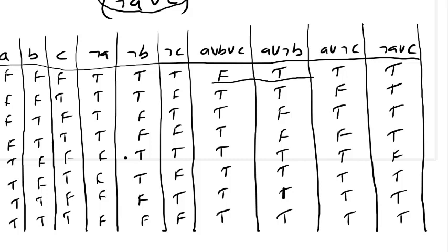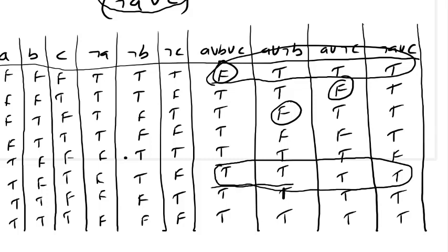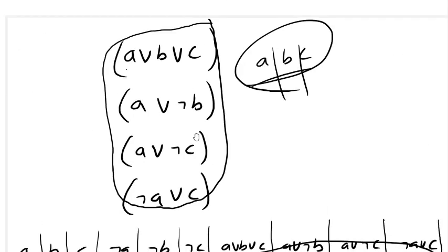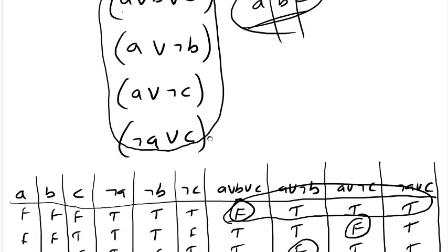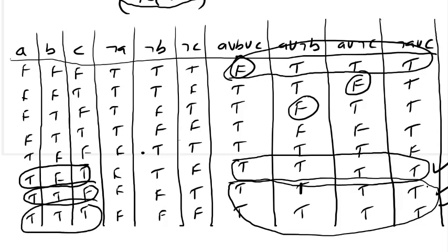Looking at the eight assignments, we find that a particular assignment does satisfy the clauses. For example, A equal to true, B equal to false, and C equal to true can make this particular set of clauses satisfiable. So we say the set is satisfiable and we are done.